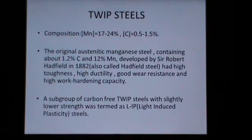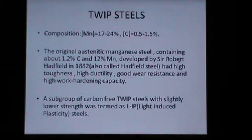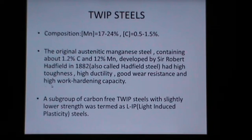Regarding the history of TWIP Steels, the original austenitic manganese steel containing about 1.2 percent by weight of carbon and 12 percent by weight of manganese was developed by Sir Robert Hadfield in 1882, also called the Hadfield steel. It had high toughness, high ductility, good wear resistance, and high work hardening capacity.